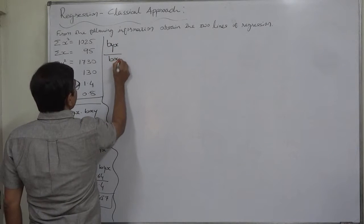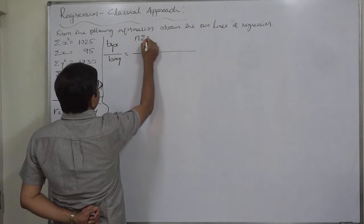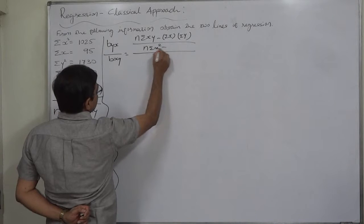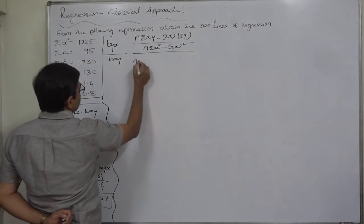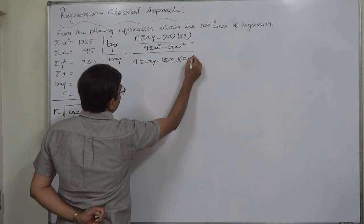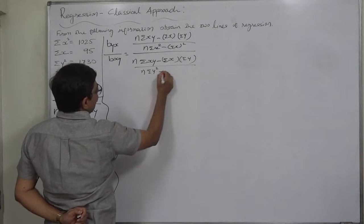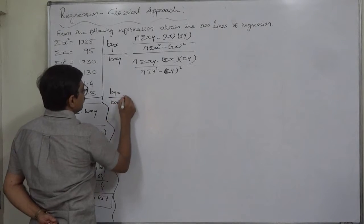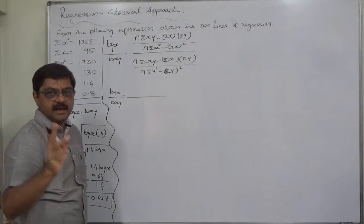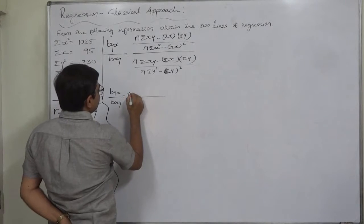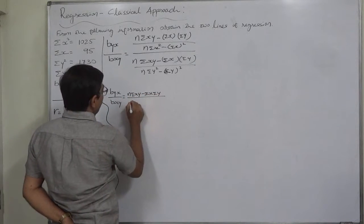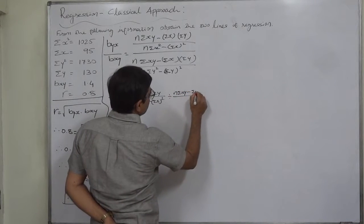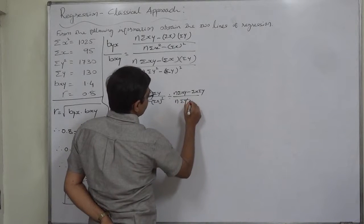The formula: byx = (n·sigma_xy − sigma_x · sigma_y) / (n·sigma_x² − (sigma_x)²), and bxy = (n·sigma_xy − sigma_x · sigma_y) / (n·sigma_y² − (sigma_y)²). Taking the ratio byx/bxy, dividing by a fraction means multiplying by its inverse. So byx · bxy = (n·sigma_y² − (sigma_y)²) / (n·sigma_x² − (sigma_x)²), after cancellation of the common numerator terms.